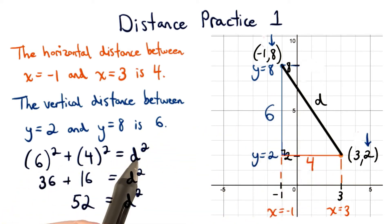We solve this equation to get d squared equals 52, and then we take the square root of both sides to get d is equal to the square root of 52.